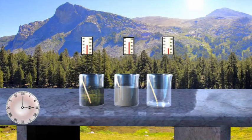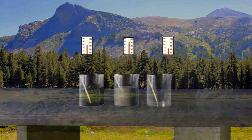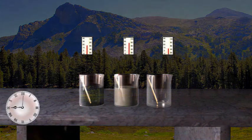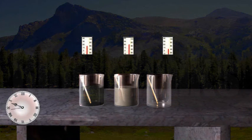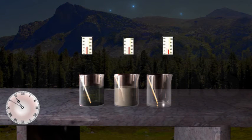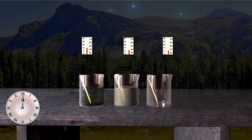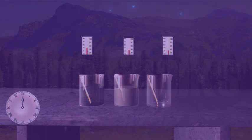Now, keep all the beakers in shade or dark. After three hours, note the temperature in all beakers. From the readings, we see that the temperature is lowest in the second beaker. This shows that soil gets cooled faster than water and air.